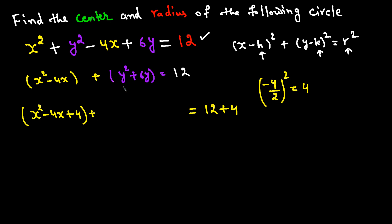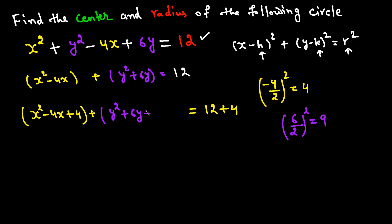For the Y group, the coefficient of Y² is also 1. Take the coefficient of Y, which is 6, divide by 2 to get 3, and square it to get 9. Add 9 to both sides.